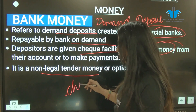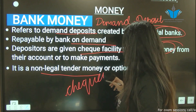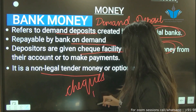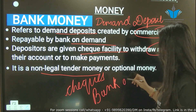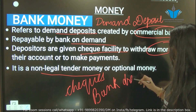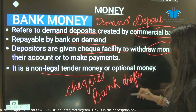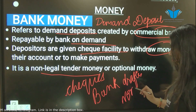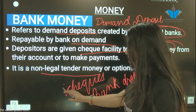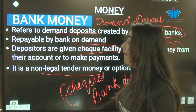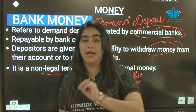Bank money is non-legal tender money and is also called optional money. Under this come cheques, bank drafts, and NEFT. All of these are facilitated through bank money, which is why we refer to it as optional money.